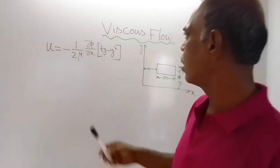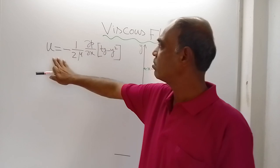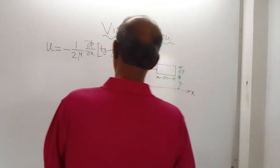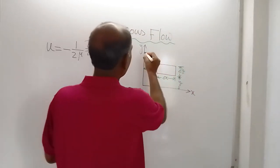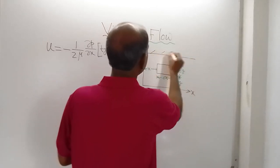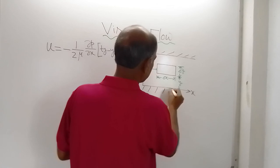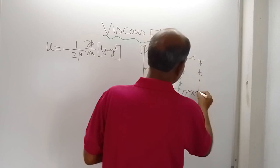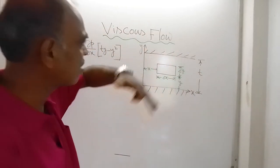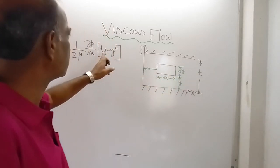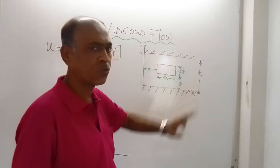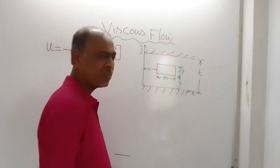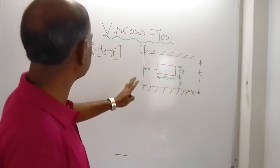Here you can see I have written: U = -1/(2μ) · (∂P/∂x) · (Ty - y²). Here T is the distance — the normal gap between the two plates. A rectangular fluid element was taken with dimensions δx and δy. This was the velocity distribution.